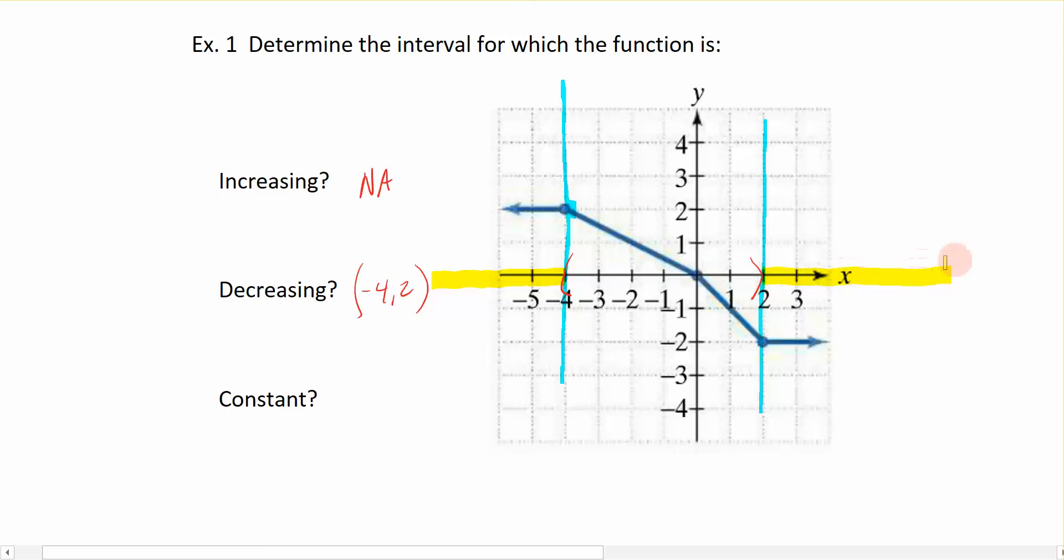And then we have another segment that would be constant over here on the right-hand side of my blue line. And we need to write it in terms of x for that segment as well. So where is this constant? It's constant from negative infinity up to negative 4. And it's constant again from 2 to positive infinity.